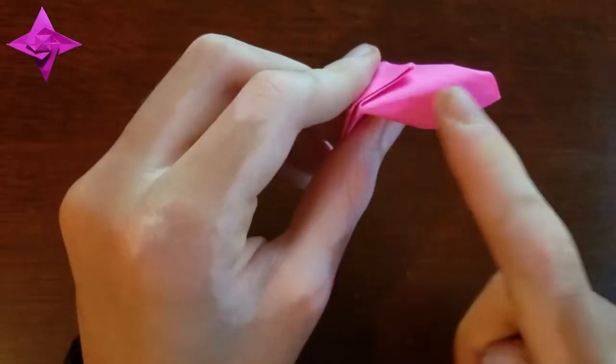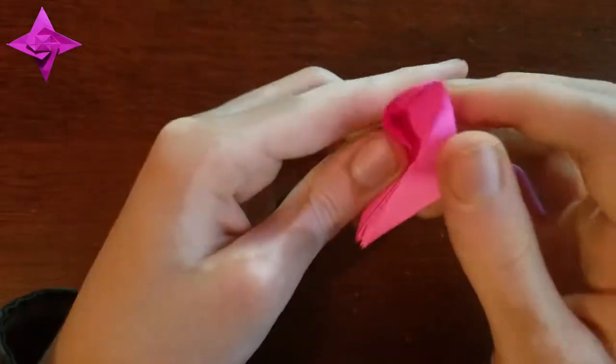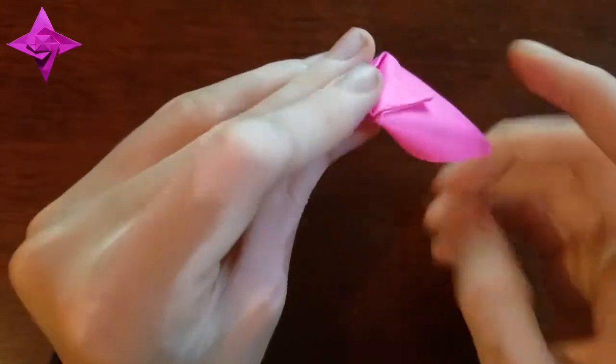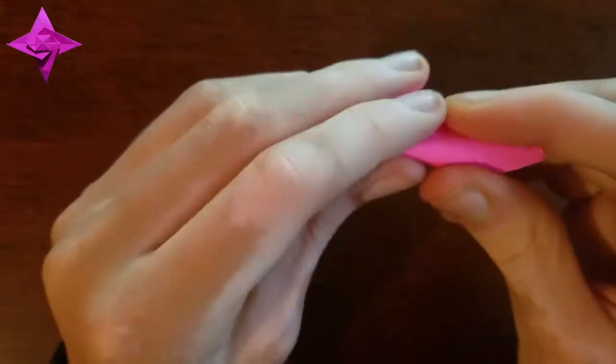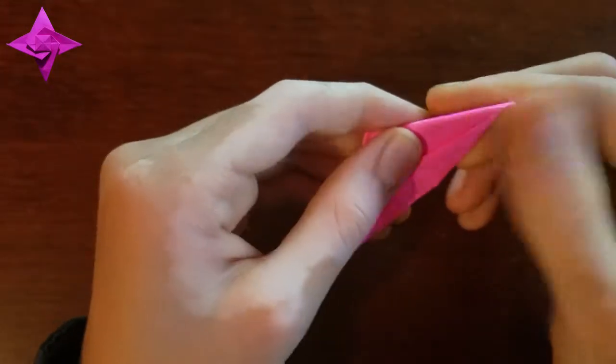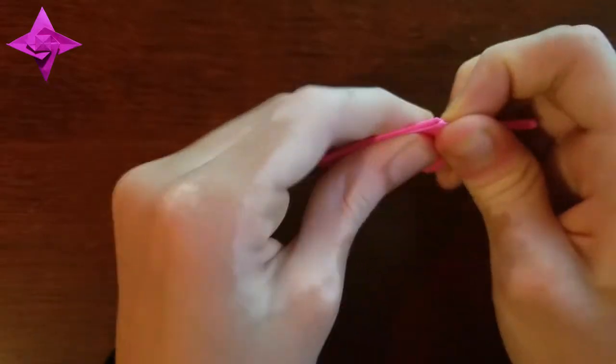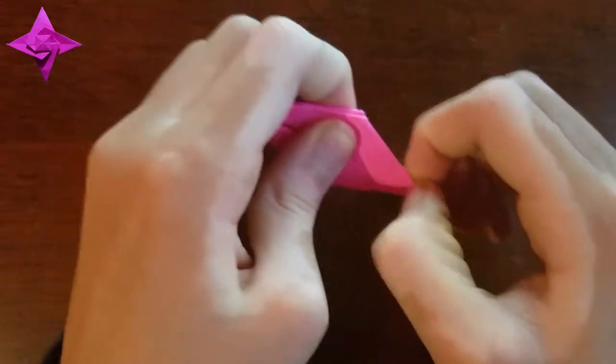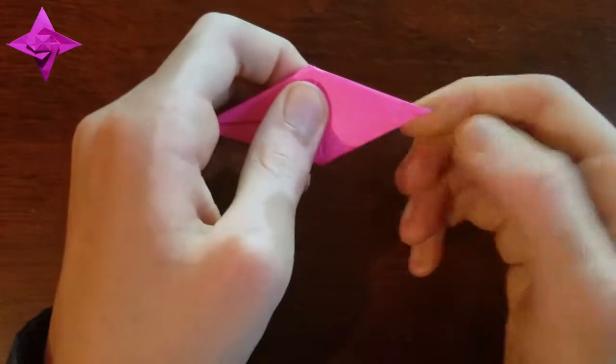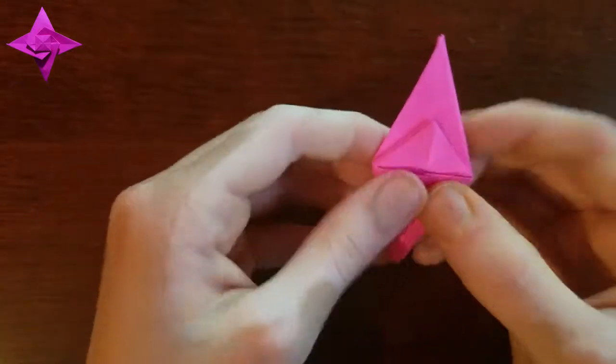And then reversing these two folds, like this, so from a valley fold to a mountain fold like this, turn over.